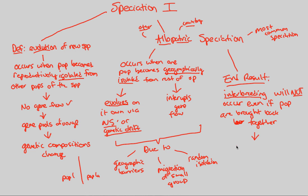This is because they both became reproductively isolated. They cannot physically, mentally, or behaviorally ever reproduce with each other simply because of this speciation event — they grew up and evolved in different environments. Allopatric speciation is other-country speciation that causes evolution in two separate environments. Even if you bring those two populations back together, they will not breed because of the reproductive isolation set forth by the allopatric speciation.